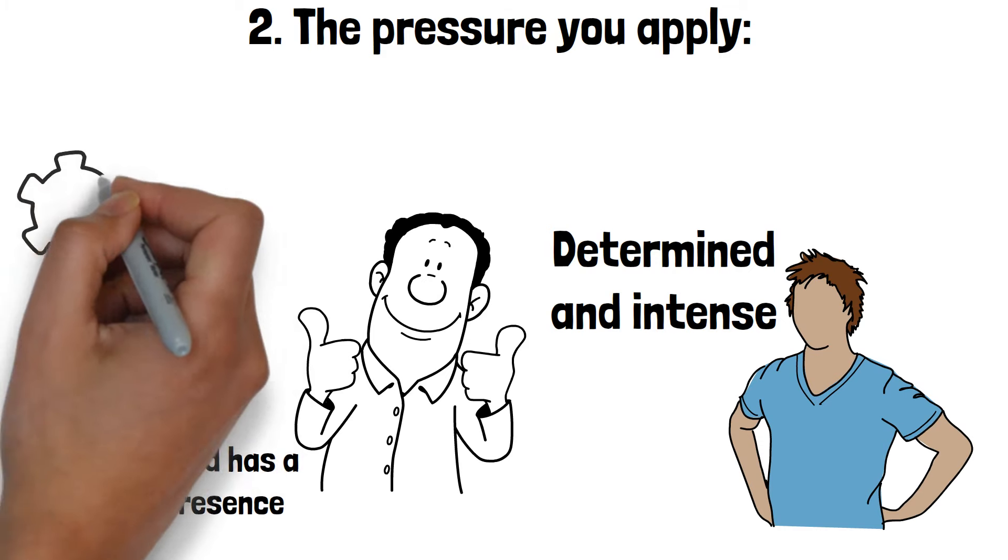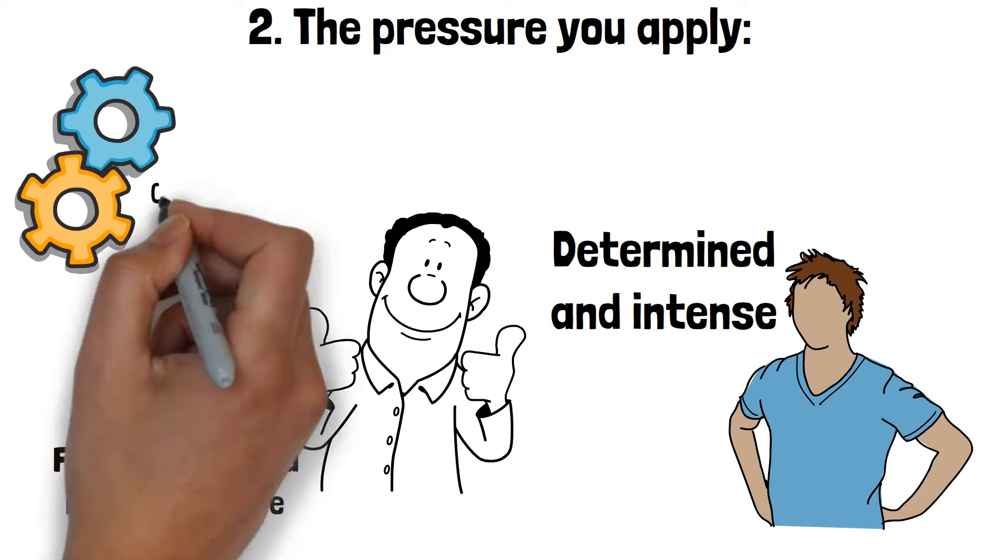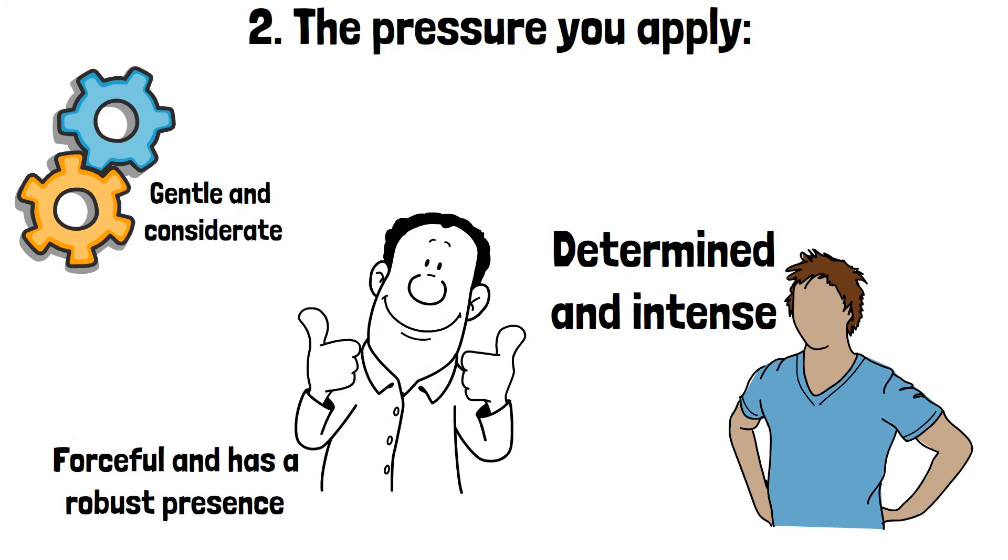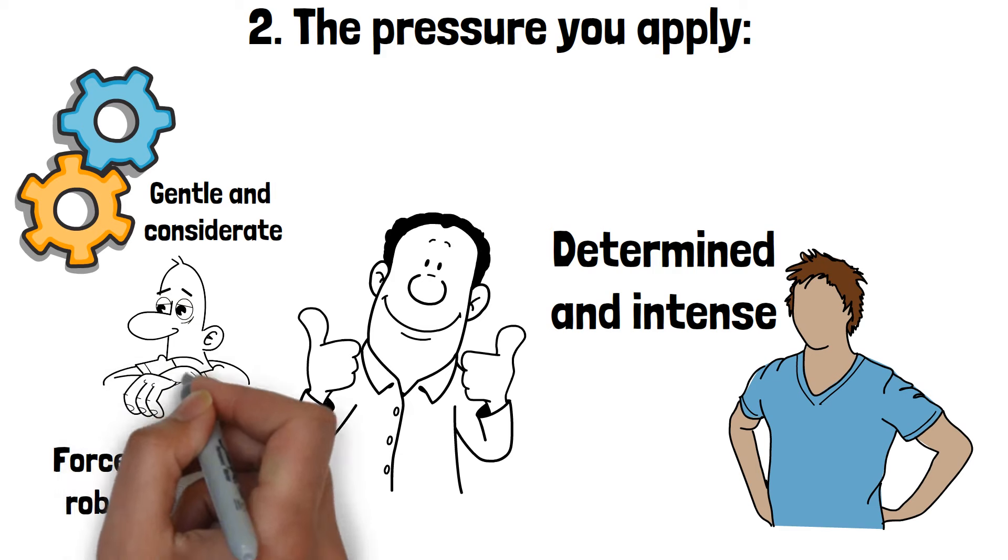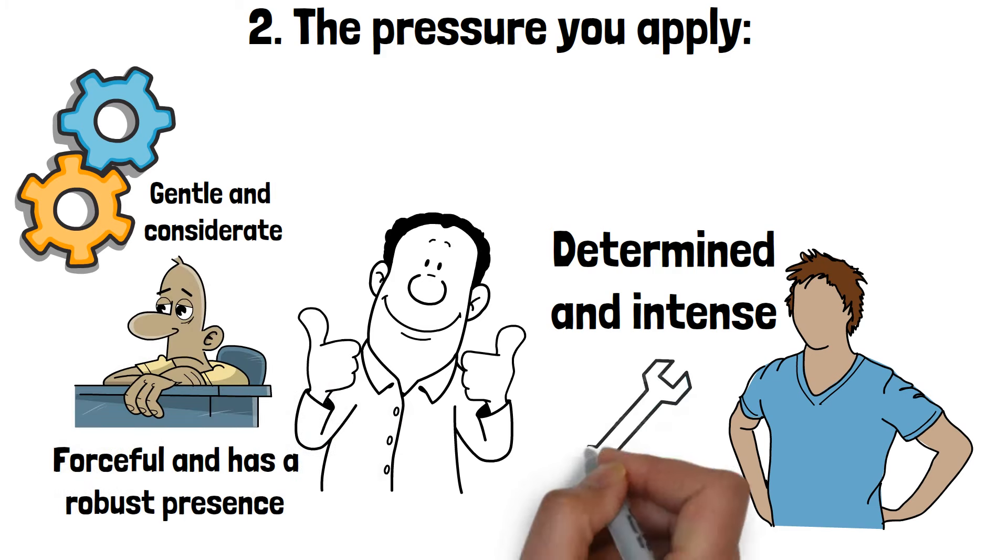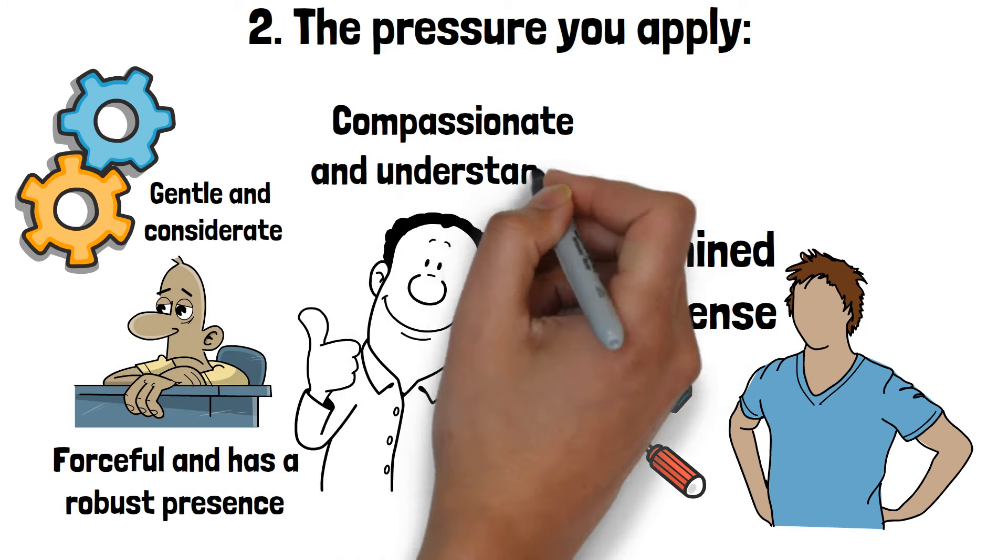In contrast, light pressure suggests sensitivity and empathy. If your writing is light and delicate, it shows that you are gentle and considerate. People with light pressure are usually more aware of others' feelings and have a nurturing nature. They tend to be more adaptable and willing to go with the flow. This kind of handwriting indicates a person who is compassionate and understanding.